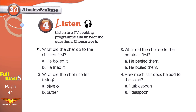Now we've answered most of these questions. What did the chef do to the chicken first? He boiled it, and then he fried it. What did the chef use for frying? Olive oil — even though butter would have tasted better, he used olive oil to make it healthier. What did the chef do to the potatoes first? He boiled them, and then he peeled them. How much salt? Just a teaspoon — not a tablespoon. That would have been too much salt.